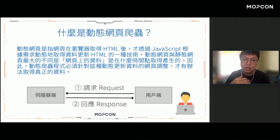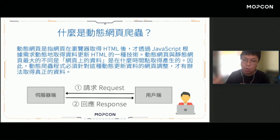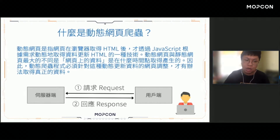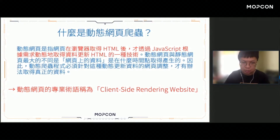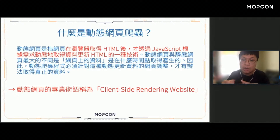載入中的圖示其實代表：你的瀏覽器已經抓回了這個網頁，但是這個網頁正在利用JavaScript這個動態語言載入更多的資料當中。我們把這種形態的網頁稱為動態網頁。動態網頁指的是網頁在瀏覽器取得HTML之後，才透過JavaScript根據需求動態地載入更多資料並且更新HTML的過程，我們把這個專業術語稱為Client-side Rendering。